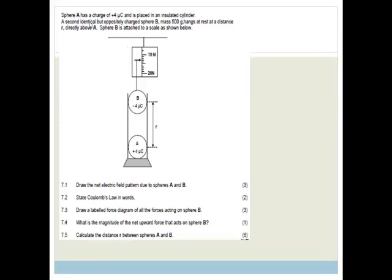So it says sphere A has a charge of plus 4 microcoulombs, there's sphere A, plus 4, and is placed in an insulated cylinder. A second identical sphere but opposite charge is placed as B and it has a mass of 500 grams. So this has got a mass of 500 grams and it hangs at rest at a distance R between the two.